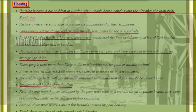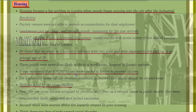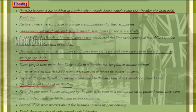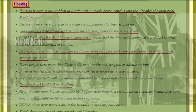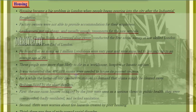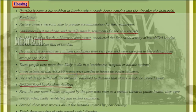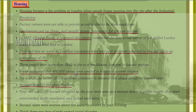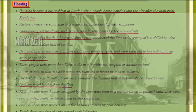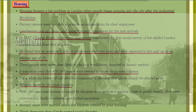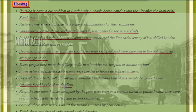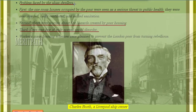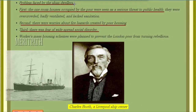It was estimated that 4 lakh rooms were needed to house the poorest citizens. For a while, the better-off city dwellers continued to demand that slums simply be cleared away. There were many problems faced by slum dwellers.